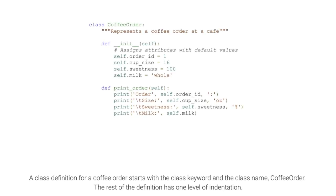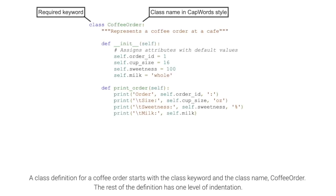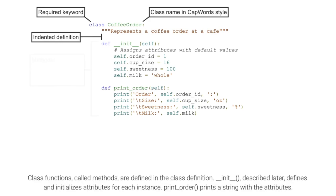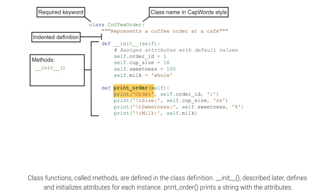A class definition for a coffee order starts with the class keyword and the class name coffee order. The rest of the definition has one level of indentation. Class functions, called methods, are defined in the class definition.